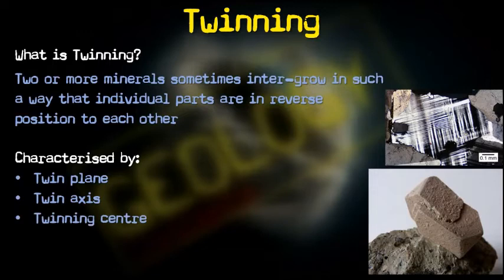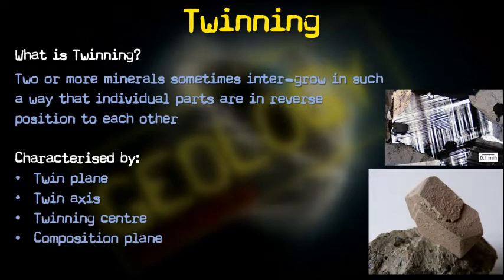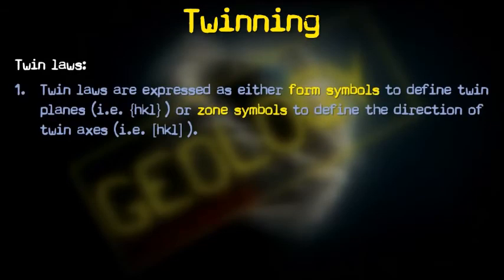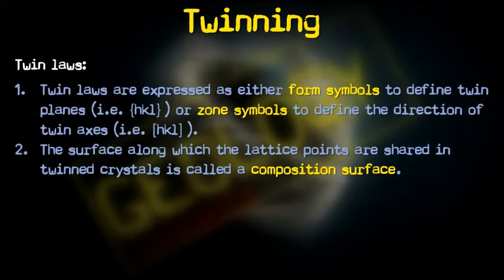Then there is a twin center or twinning center. When twinning is defined with respect to the symmetry about a point, this is called twin center. The plane by which the component crystals of a twin are joined is called a composition plane. More fundamental to twinning are the twin laws, which are expressed as either form symbols to define the twin plane, or as zone symbols in square brackets or Miller indices to define the directions of the twin axis. The surface along which lattice points are shared in twin crystals is called the composition surface.